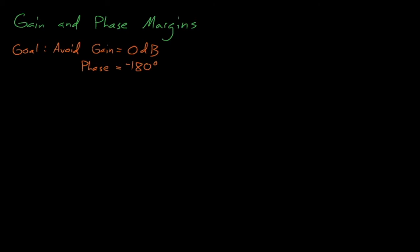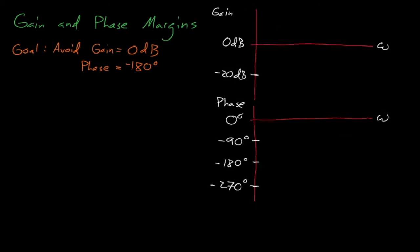Gain margins and phase margins tell us how close a system is to having an unstable gain and phase. Consider the following Bode plots. Our goal here is to avoid the point where the system's gain equals 1, or 0 decibels, and its phase equals negative 180 degrees. Let's consider the situation where our phase equals negative 180 degrees. We can identify the frequency where this bad phase occurs and track it up to the gain plot. The difference between the system's actual gain at this frequency and the dreaded gain of 0 decibels is known as the gain margin.